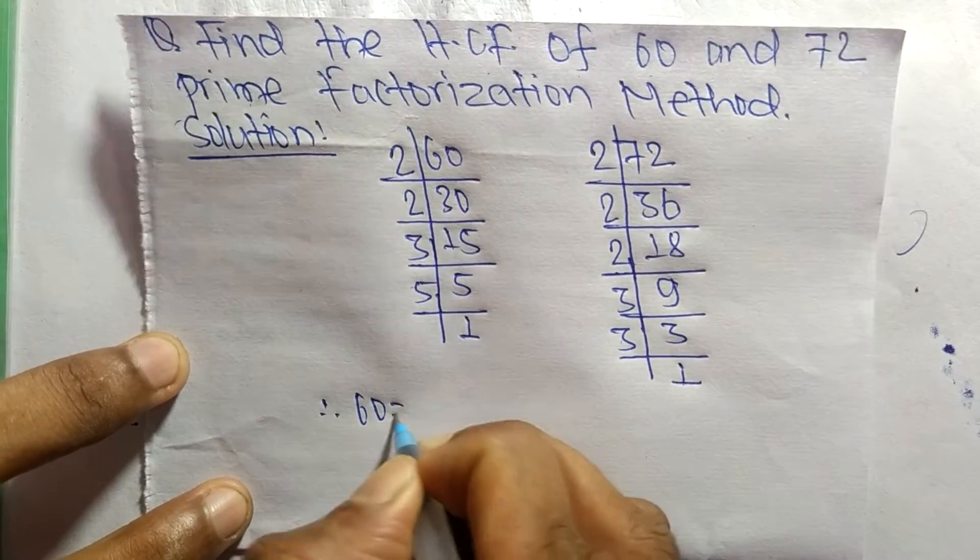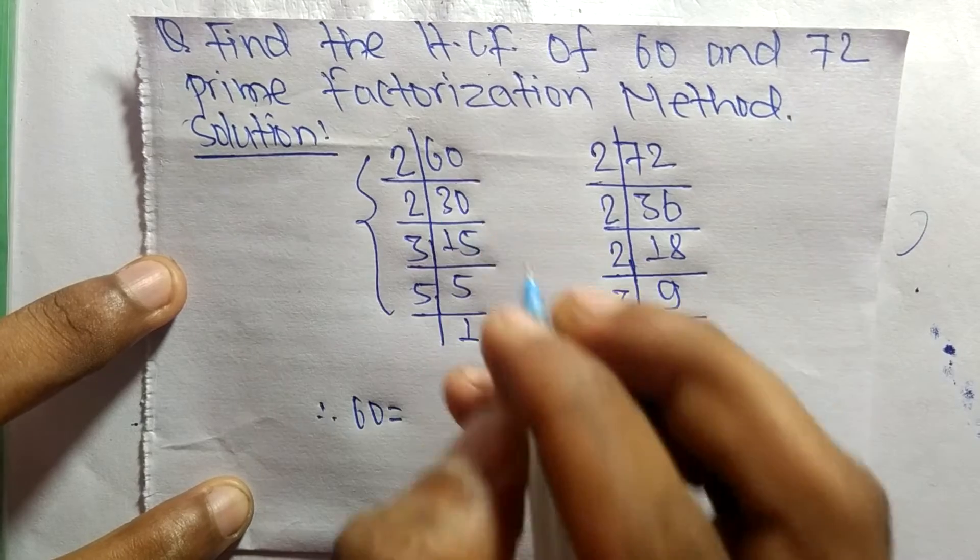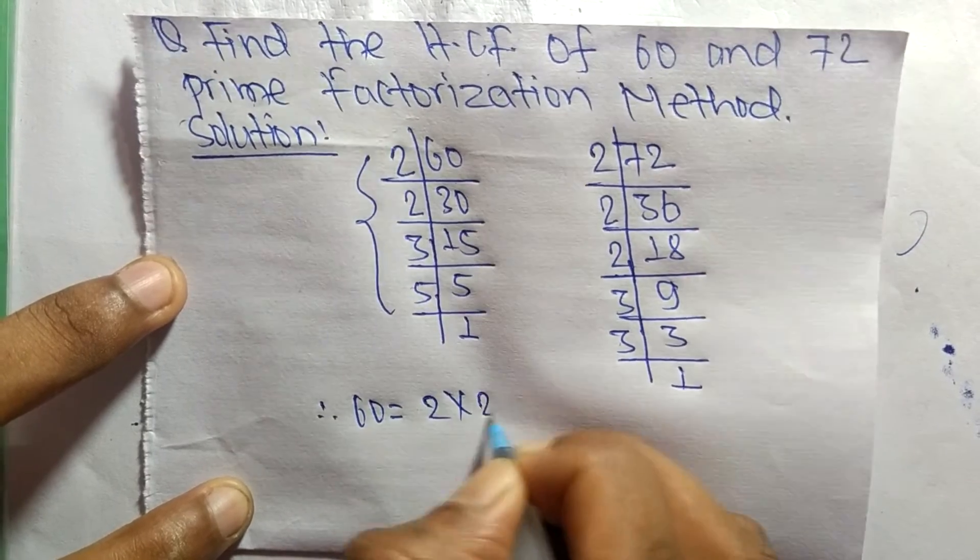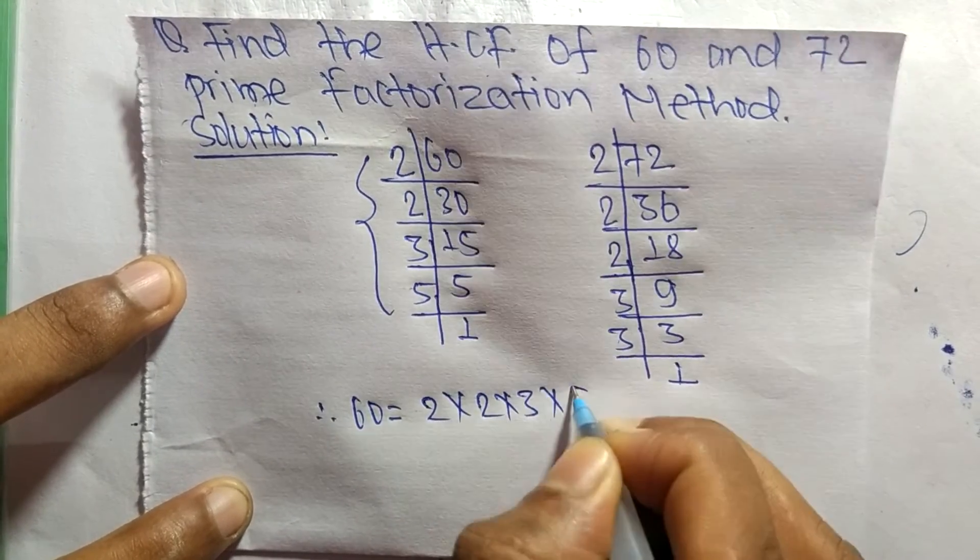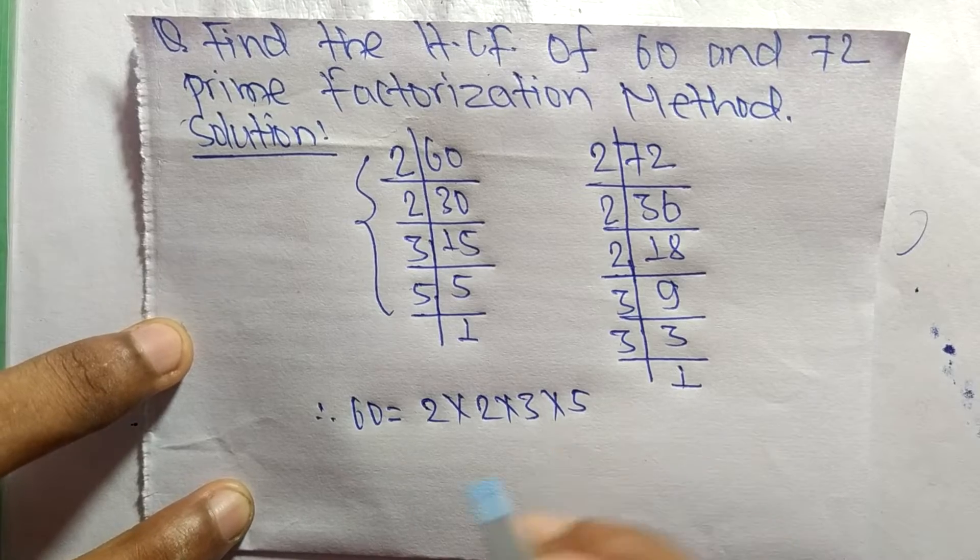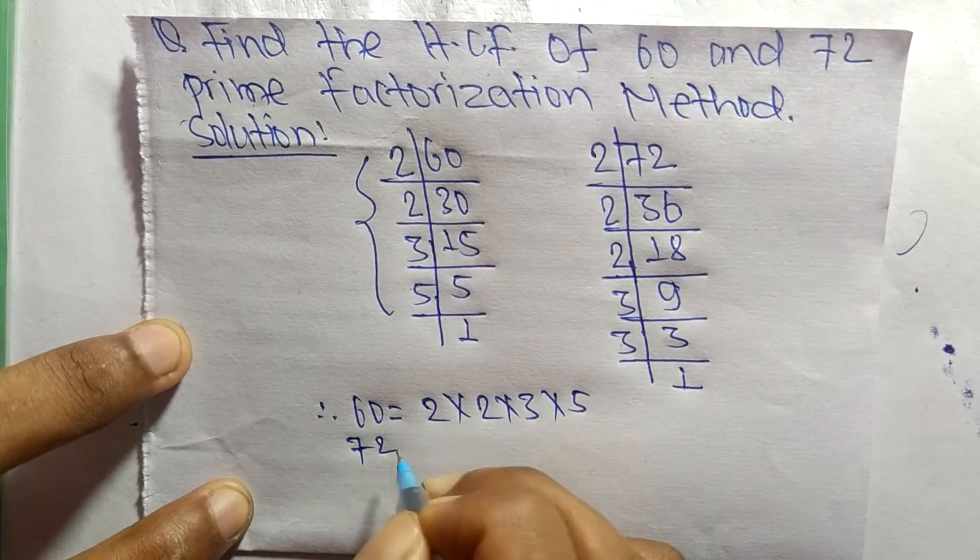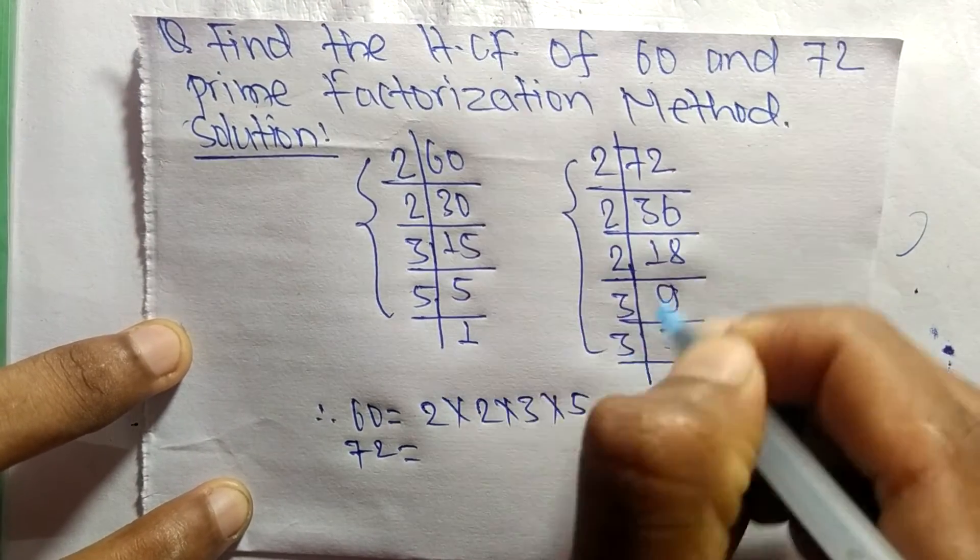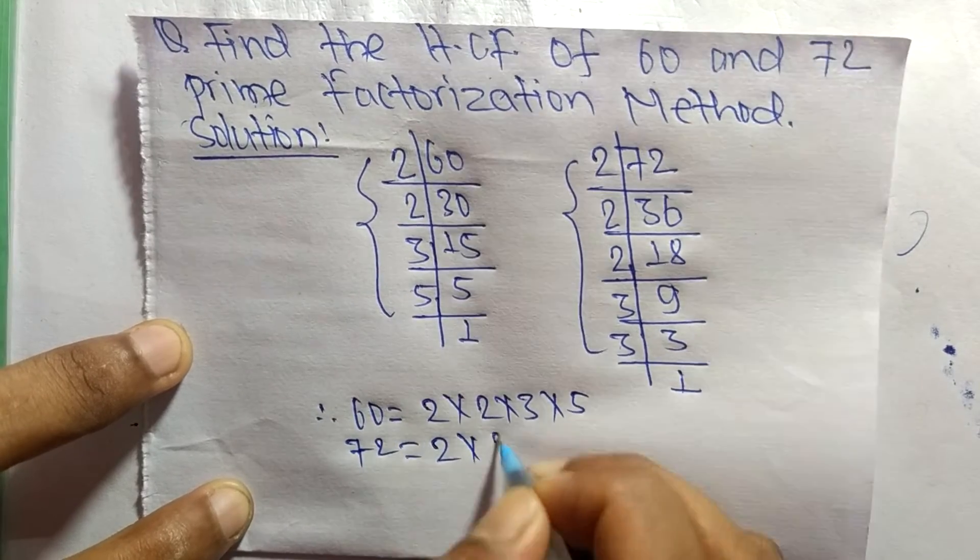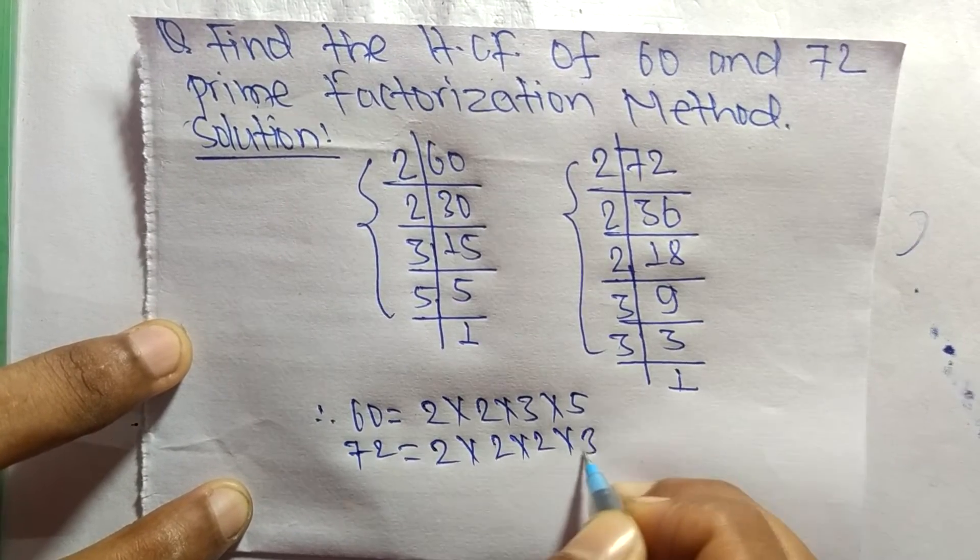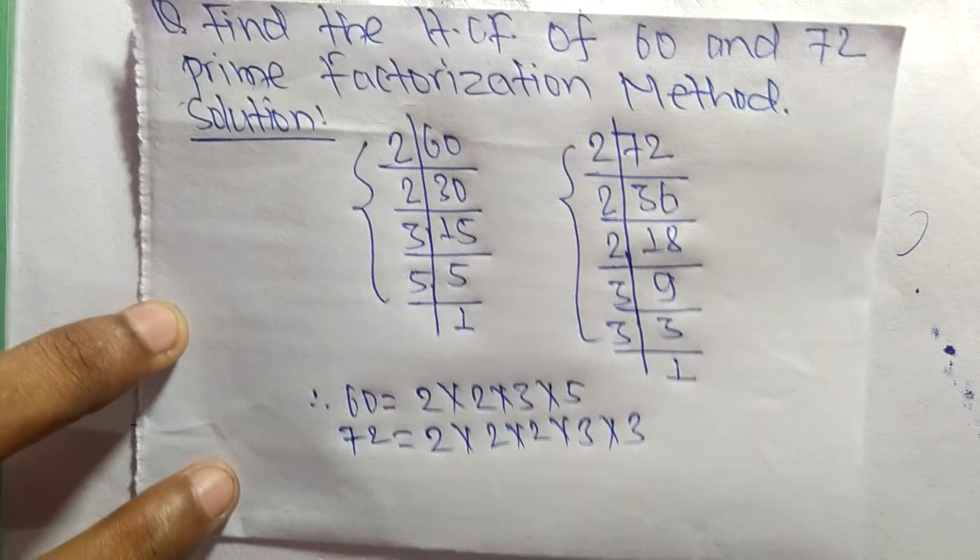Now from these prime factors we can write 60 is equal to, from this part, it is 2 times 2 times 3 times 5. Likewise, 72 is equal to, from this part, it is 2 times 2 times 2 times 3 times 3.